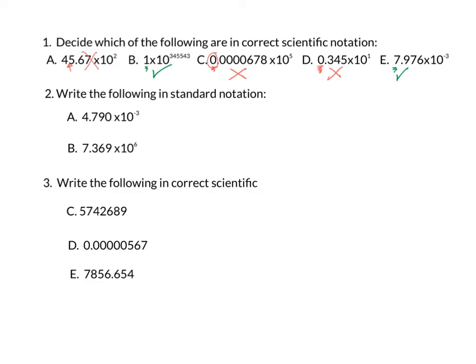In part 2, you're asked to write the following in standard notation. Please pause the video for answer A. I'm going to rewrite the numbers so that I have somewhere to show the work. Since the exponent is a negative 3, that means our answer will be something smaller than 1, so we're going to be going backwards with our decimal point. We're going to have to add some zeros in as placeholders, and we'll find our answer after we go back 1, 2, 3 spaces.